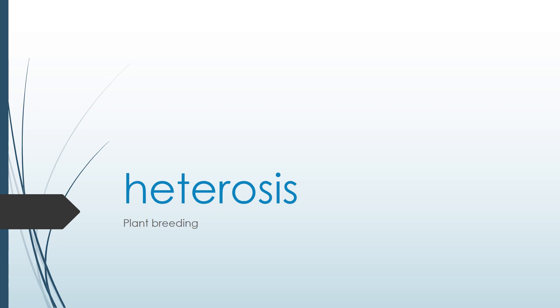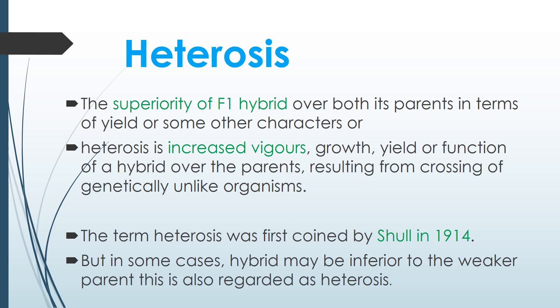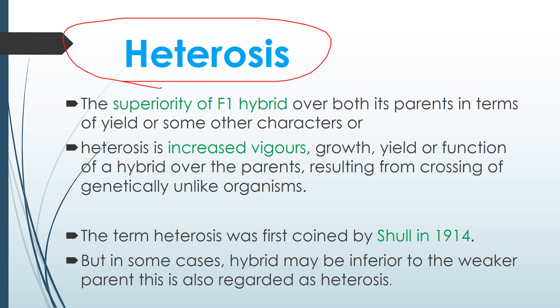Welcome to Leaves and Lungs. Today's topic is heterosis in the plant breeding series. The actual definition of heterosis is the superiority of the F1 hybrid over both of its parents in terms of yield or some of their characters.